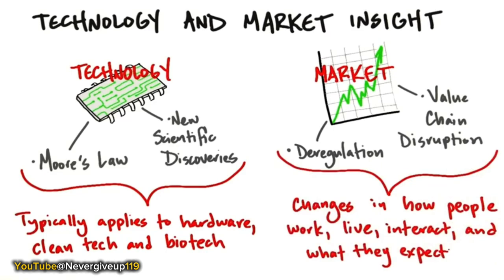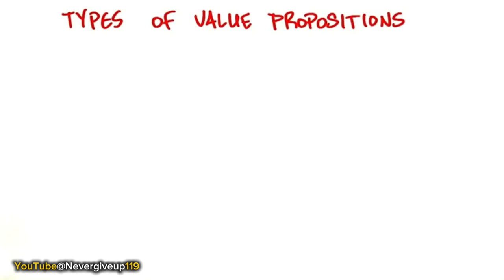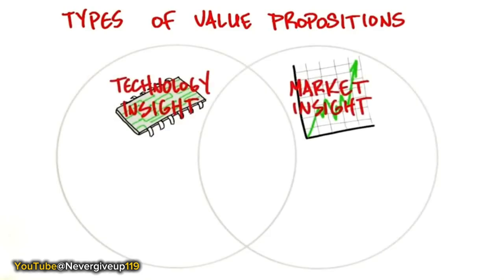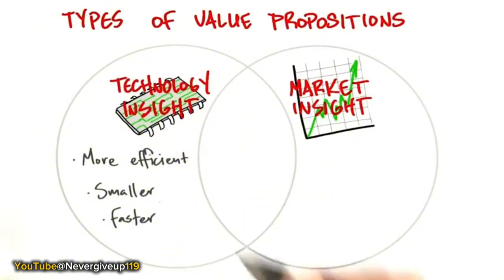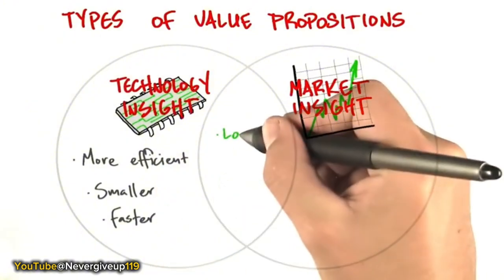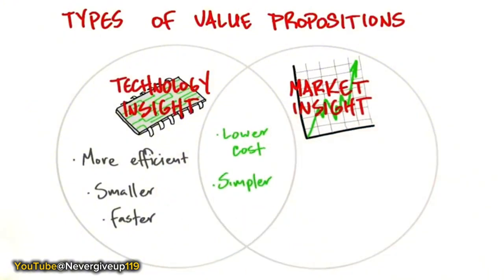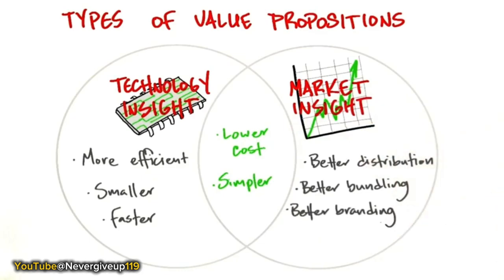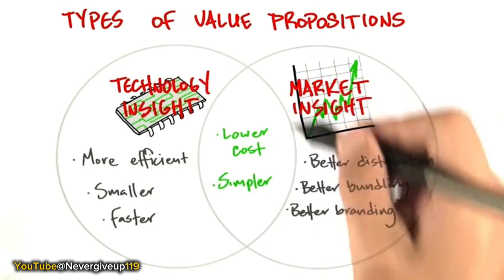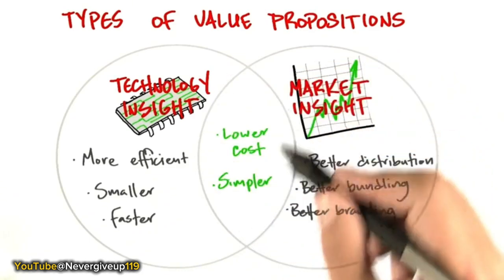There's another way to look at types of value propositions — kind of as a Venn diagram. What comes from technical insights includes making things more efficient, smaller, faster, and sometimes lower cost and simpler. What comes from market insights includes distribution, bundling, and branding. But sometimes you have a sweet spot in the middle — a combination of technical and market insights that makes for a killer value proposition.